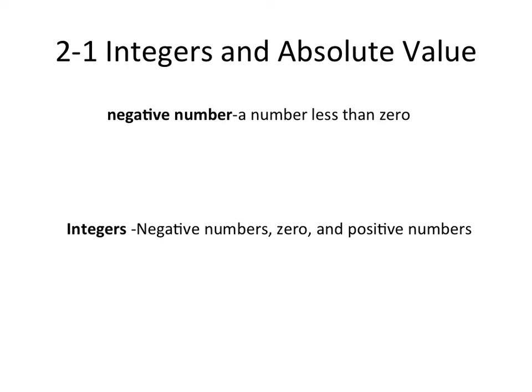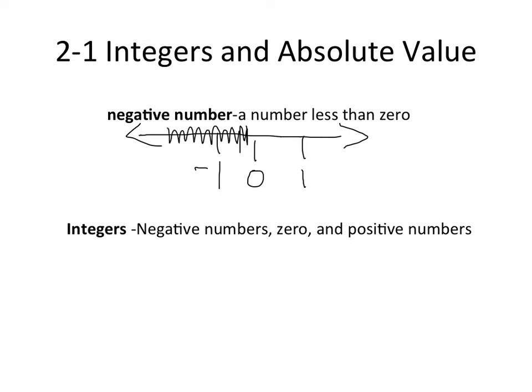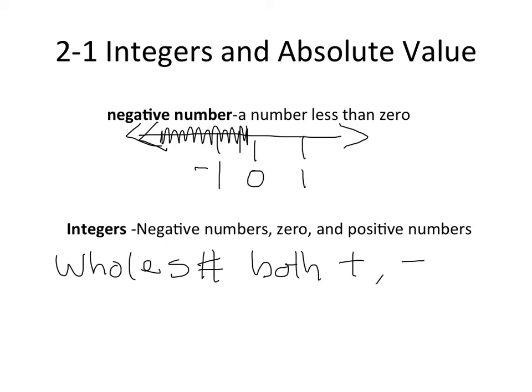Before we begin, we do have some vocabulary to go over. The first one is negative number — a number less than zero. This number line represents all the numbers less than zero, so everything to the left of zero going to infinity is a negative number. Our next key term is integers, described as negative numbers, zero, and positive numbers. Basically, they're whole numbers that are both positive and negative.